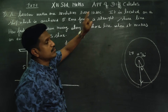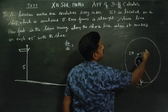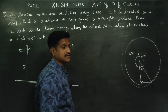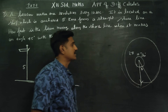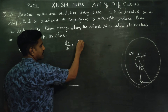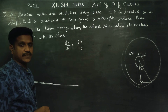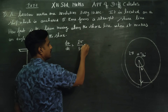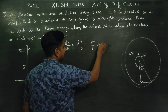One revolution in 10 seconds means it covers an angle of 360 degrees in 10 seconds. So dθ/dt equals 360 degrees divided by 10 seconds.